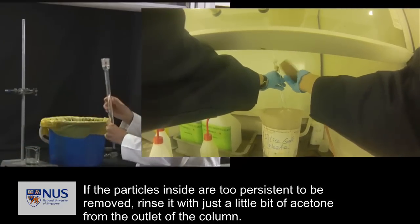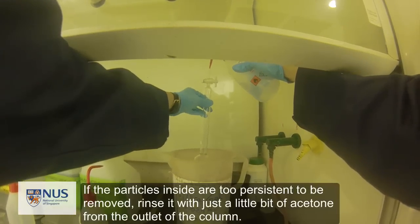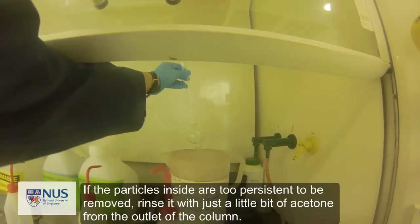Invert the column and use the rubber tubing to tap on the walls and to eject the silica gels. If the particles inside are too persistent and stubborn to be removed, rinse it with just a little bit of acetone from the outlet of the column.